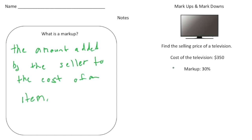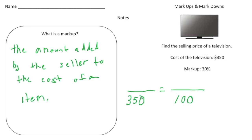Let's do a problem here together. Find the selling price of a television where the cost was $350, but it's marked up 30%. We're going to create a proportion — a percent proportion — with 100 in the denominator. We know that 100% of the price is $350, so $350 goes across from the 100. The company adds an additional 30%, so we use 130 on top. Notice I added 30% to 100 to get 130.